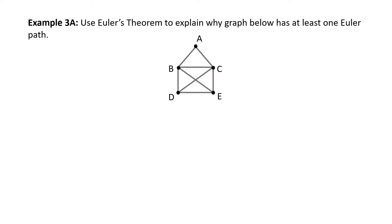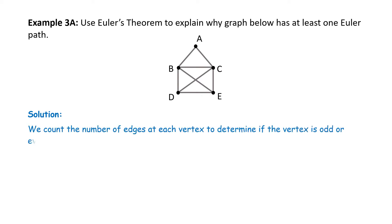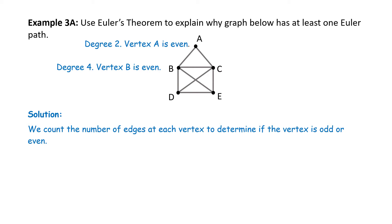Example 3a. Use Euler's Theorem to explain why the graph below has at least one Euler path. Solution: we can count the number of edges at each vertex to determine if the vertex is odd or even. Starting at A, the degree is 2, so vertex A is even. Vertex B is degree 4 — it has four edges coming out of it, so B is also even. Vertex C has four edges coming out of it, making it degree 4, so vertex C is even.